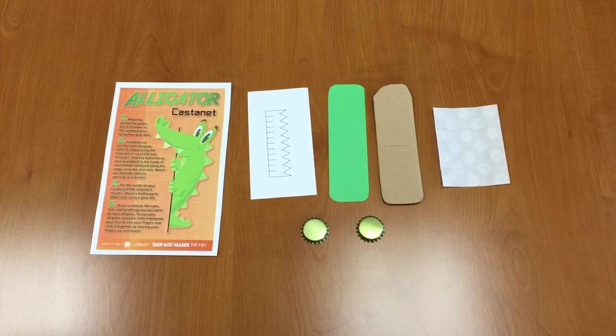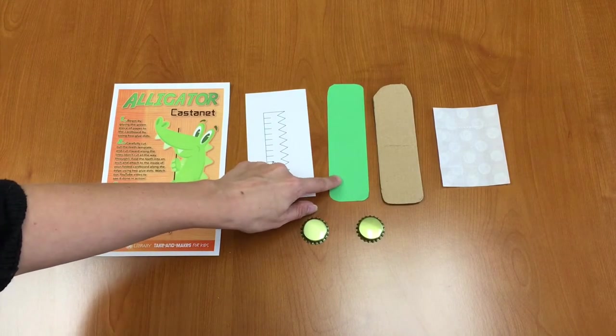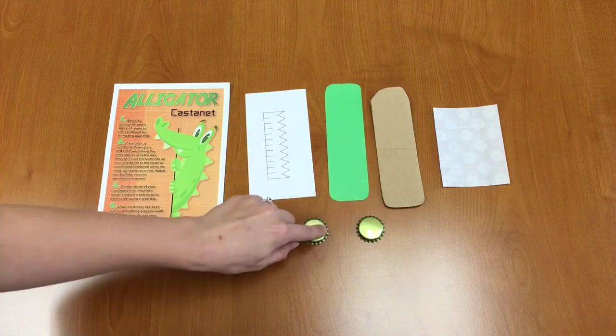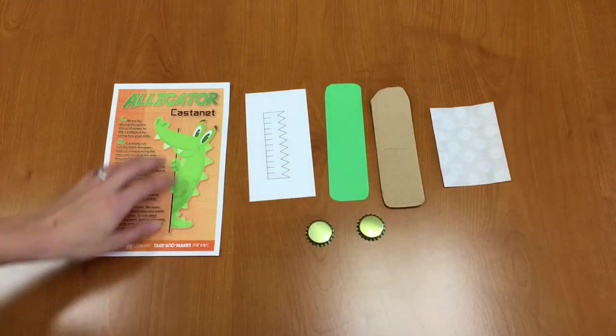In your take-and-make kit you should have an instruction sheet, a teeth template, a green piece of paper, a cardboard, two bottle caps, and a sheet of glue dots. Let's get started.